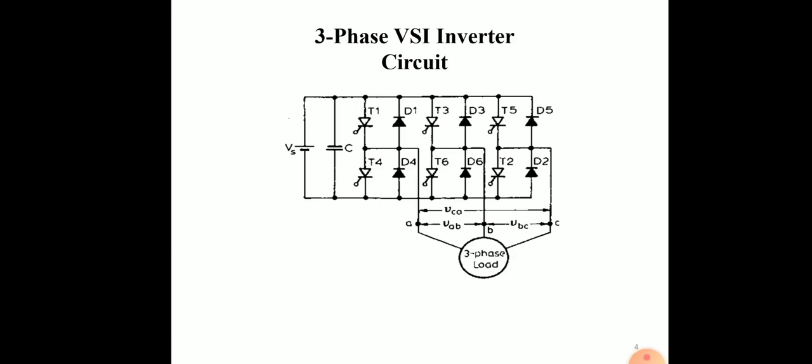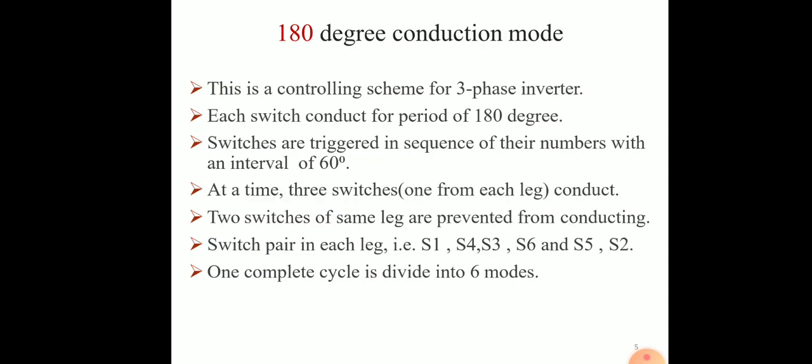Firing interval between T1, T2, T3, T4, T5, T6 is 60 degrees. So this is the basics of 180 degree conduction mode. This is the controlling scheme for the 3-phase inverter. Each switch conducts for a period of 180 degrees.